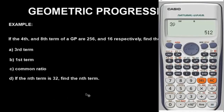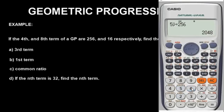Having found the third term, the next thing is to find the first term. Come in front of this symbol, remove 3 and press 1. Our first term is 2048 — very, very simple. Next, to find the common ratio, come in front of this symbol, remove 1 and put the next term after 4, which is the fifth term. Press 5, come at the back of this symbol, and divide it by what the fourth term is in the sequence, which is 256. Our common ratio is 0.5.